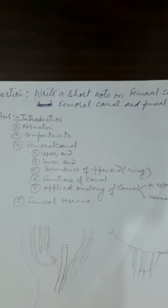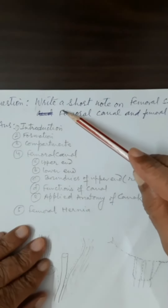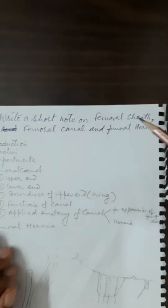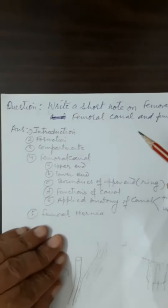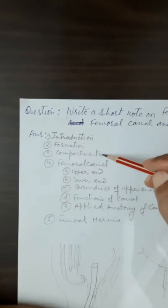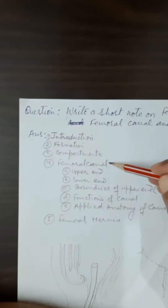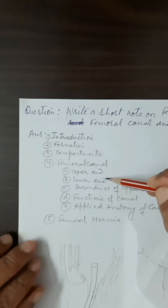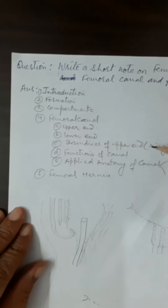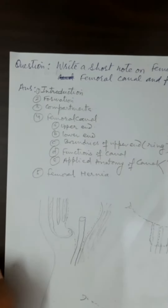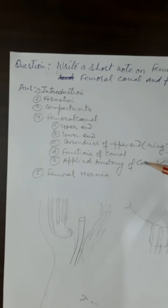Good evening students. This is a short note on the femoral sheath, femoral canal, and femoral hernia. These three things are interrelated with each other. This will be written under the following points: introduction, formation, compartments, femoral canal details including its upper end, lower end, boundaries of the femoral ring, functions of the canal, and applied importance.